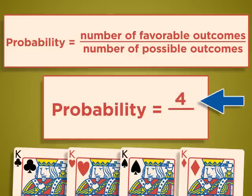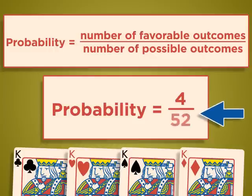Since there were 52 cards in total, any one of which could be pulled next, the number of possible outcomes is 52.